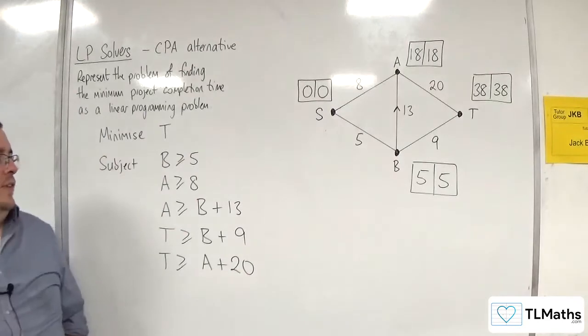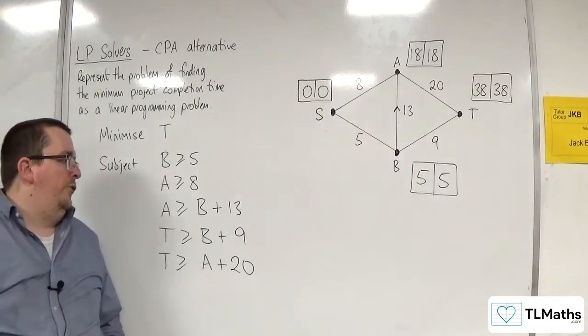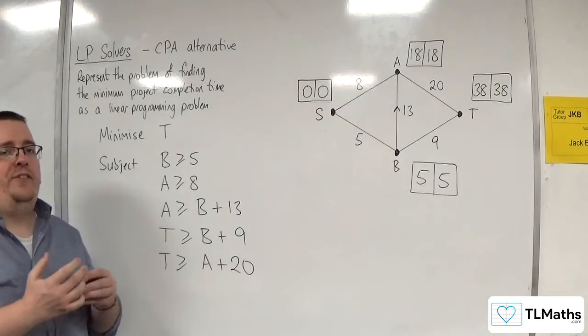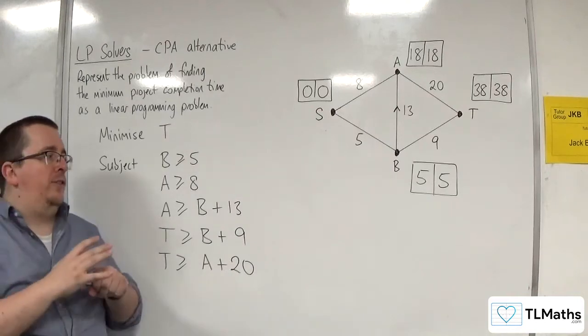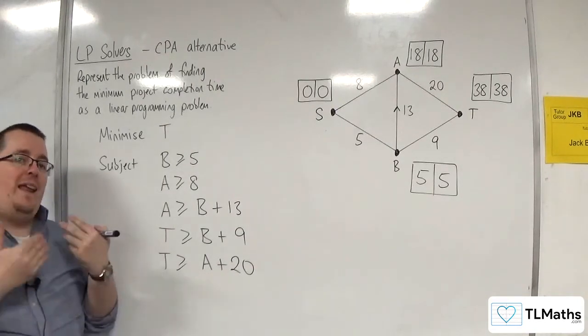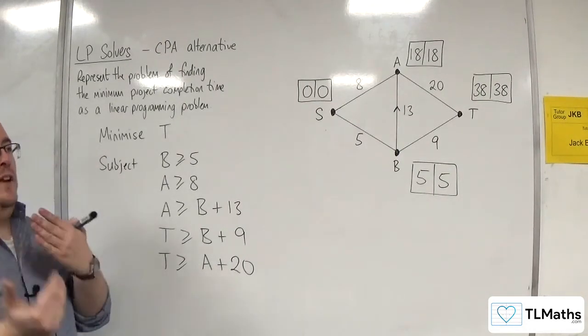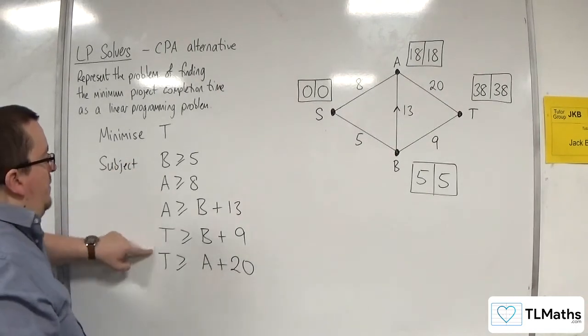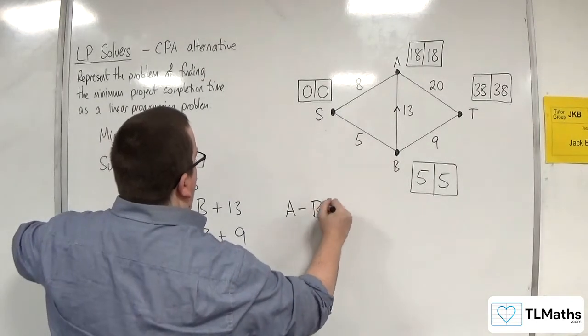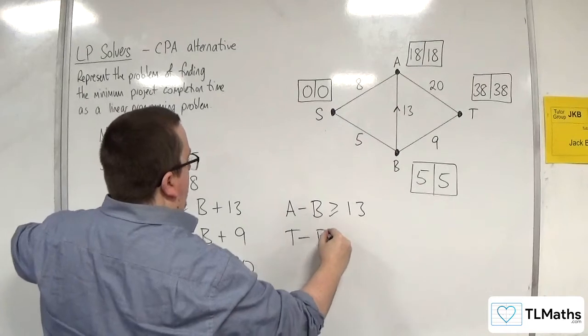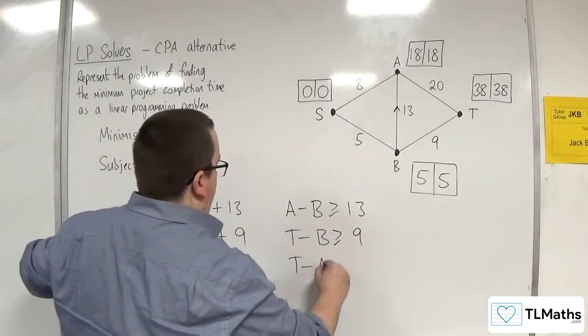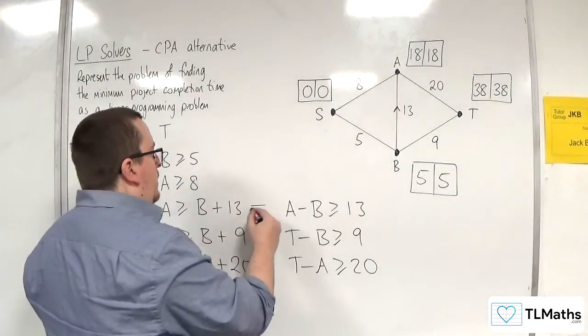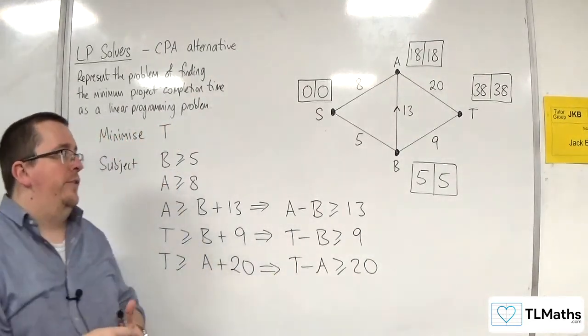Now the only thing is that this is in a non-standard form. What do I mean by that? Well, if you were to use Lindo to type this in, it won't understand it. And the reason is because it expects its constraints to have all of the variables on the left-hand side of the inequality or equation, in essentially the way that you would expect to put it into the simplex algorithm. So these ones are fine. But these three you would instead have to write as A take away B is greater than or equal to 13. T take away B is greater than or equal to 9. And T take away A is greater than or equal to 20. So you may see marked schemes or questions that involve this form instead. And you need to decipher what's going on.